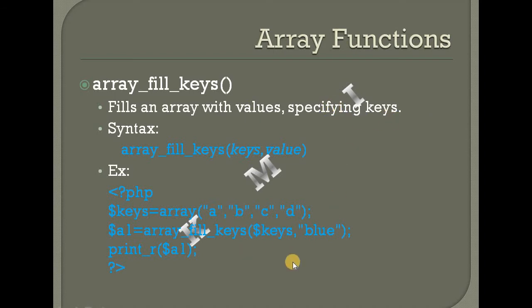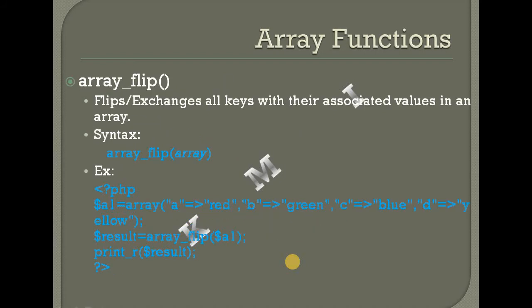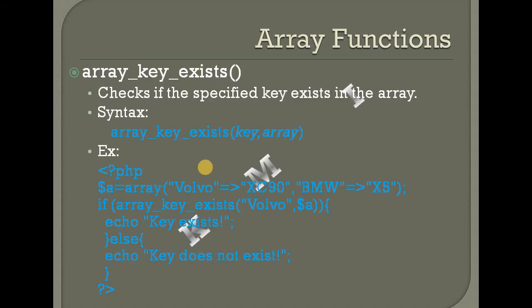Then array_flip — flip or exchange all keys with their associated values in an array. The syntax is array_flip(array). Keys and values are exchanged in the array.